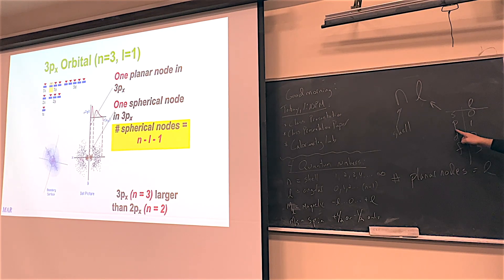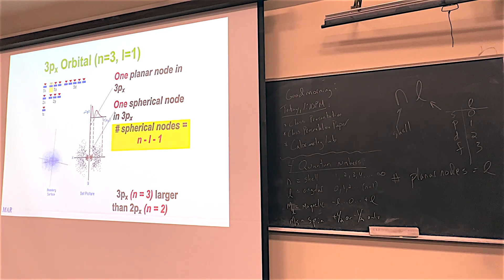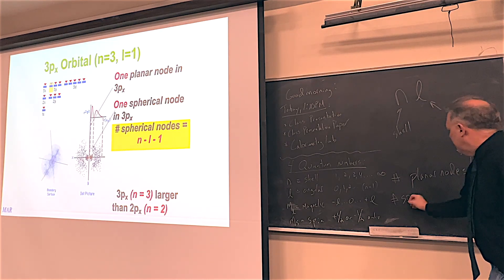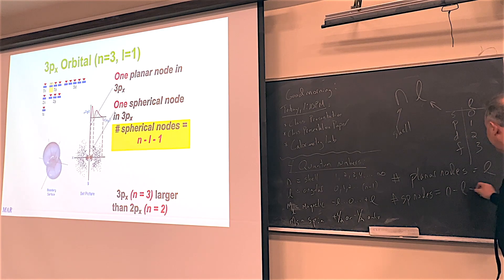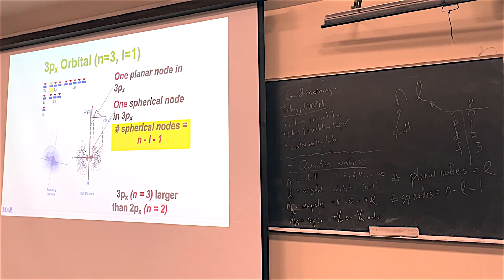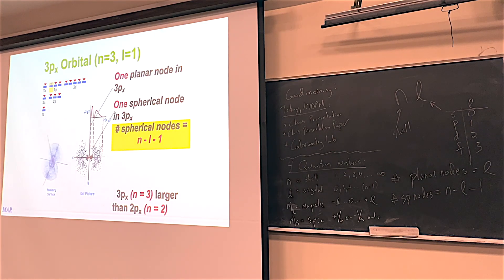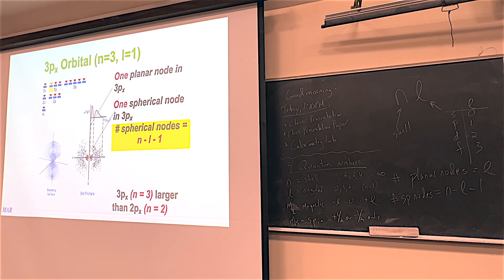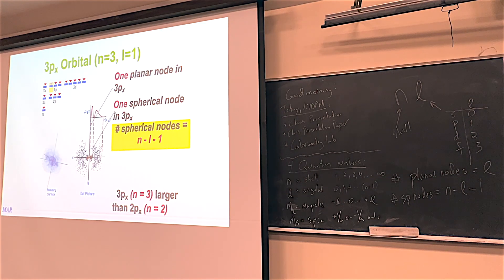There are also what they call spherical nodes. Spherical nodes are like beach balls within these electron orbitals — on the beach ball itself, there's no electron density. It's easy to calculate both types. Planar nodes equals L. The number of planar nodes equals L. So we're at a P orbital here — P is 1 — so all P orbitals have one planar node. The number of spherical nodes is N minus L minus 1. For a 3P orbital, N equals 3, P means L equals 1, so it's 3 minus 1 minus 1 — one spherical node.